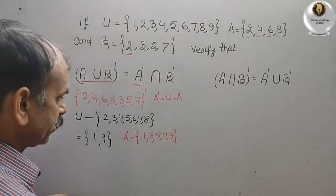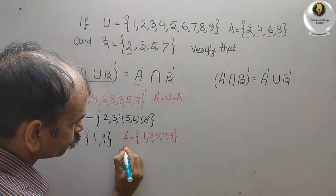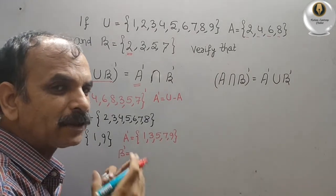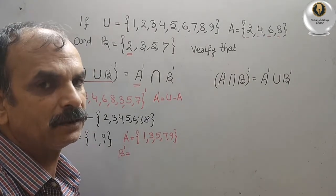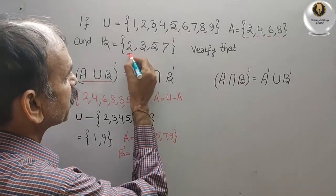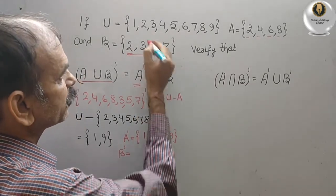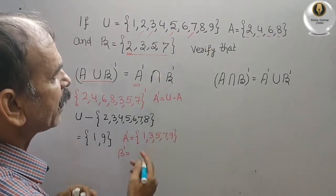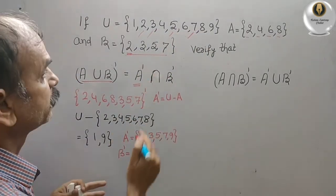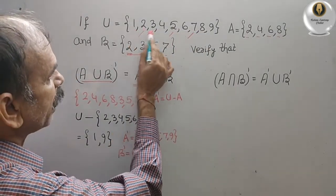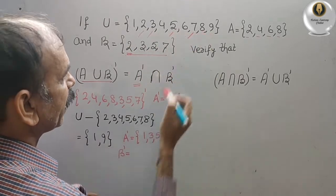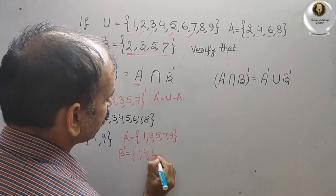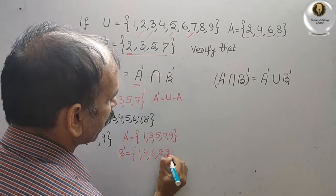Now we will write B complement. B complement is nothing but U minus B elements. B elements are {2,3,5,7}, so the remaining elements we have to write here — that is {1,4,6,8,9}. This is your B complement.